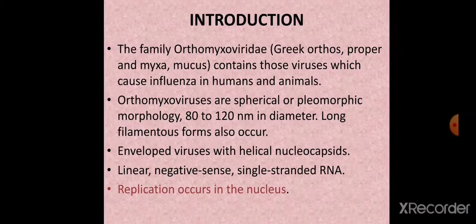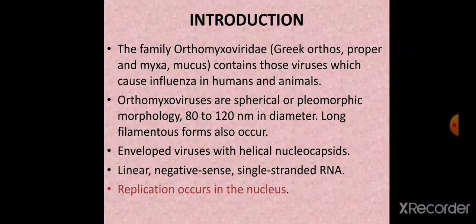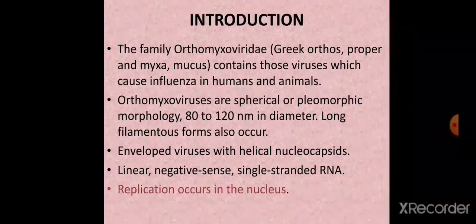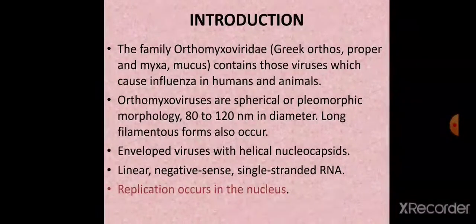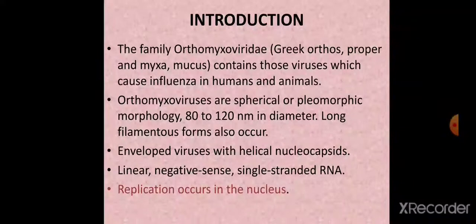Another very important characteristic is that the replication of orthomyxoviruses occurs in the nucleus. This is an RNA family, and RNA viruses typically replicate in the cytoplasm, but this is an exceptional family. Paramyxoviruses also replicate in the cytoplasm. The one exception among RNA families is orthomyxoviridae, wherein influenza viruses replicate in the nucleus of the cell.